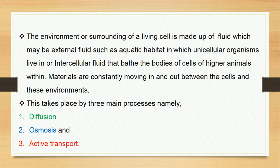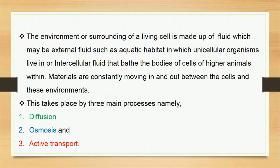The environment or surrounding of a living cell is made up of fluid. This fluid may be external fluid such as the aquatic habitat in which unicellular organisms such as paramecium, amoeba and others live in, or it can be cellular fluid that bathes the body cells of higher animals. Materials are constantly moving in and out between the cells and these environments. This takes place by three main processes: namely, diffusion, osmosis, and active transport.